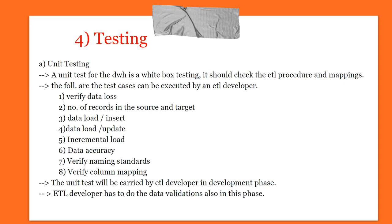Data accuracy is checked — how data is transforming from source to target, and whether any data loss is occurring. Verify naming standards — whether naming standards are correct. Verify column mapping — whether the pipeline of columns is properly mapped. For example, if an employee number column receives department number data instead, the mapping executes successfully but the data is mismatched, which becomes a logical error. This kind of issue is verified through column mapping checks. The unit test is carried out by the ETL developer in the development phase, who also does data validations.